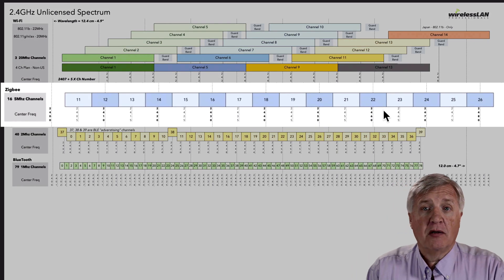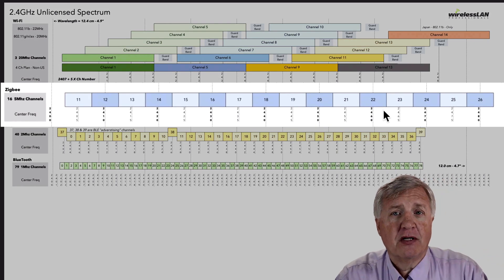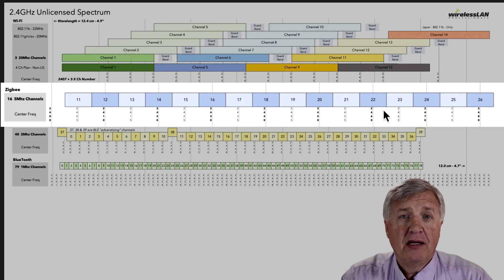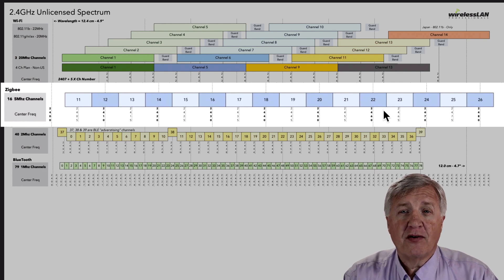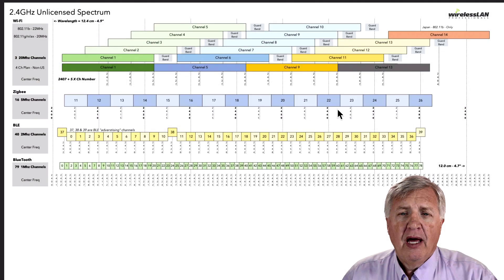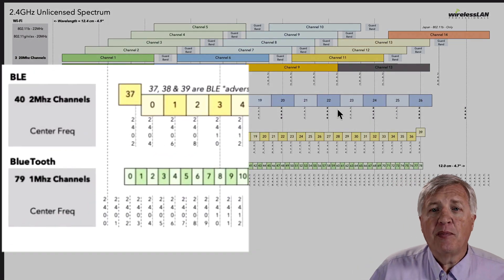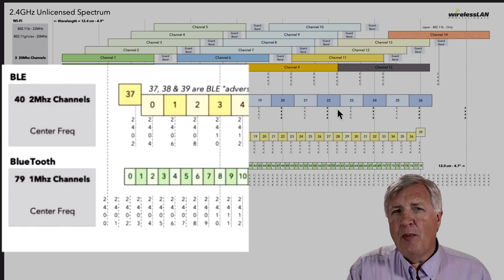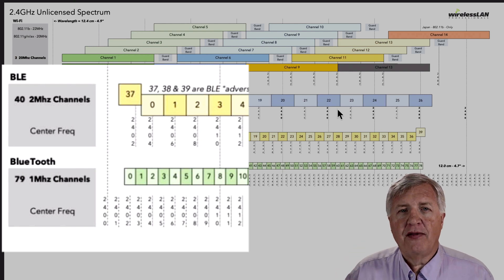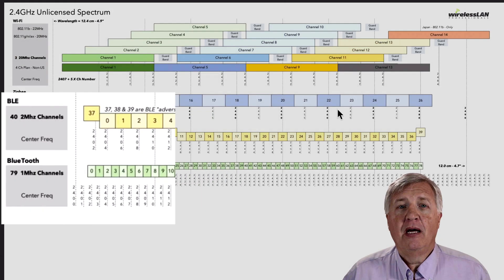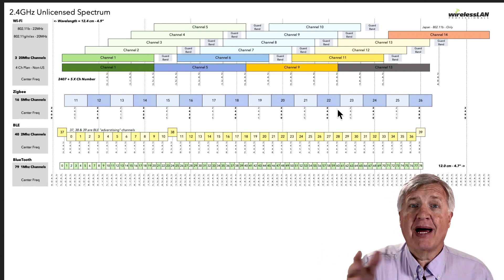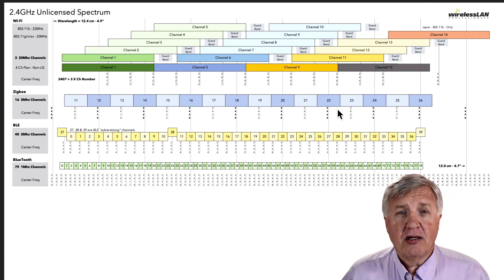We also have Zigbee here and Zigbee uses a different channel plan. They're further spaced apart. And on the graphic, you can see they have a different center frequency. And then BLE and Bluetooth, if you look at the bottom, have a whole bunch of little teeny channels and they're doing frequency hopping where they're hopping back and forth between those. All the channels are available.